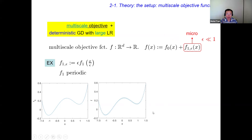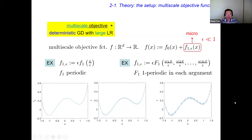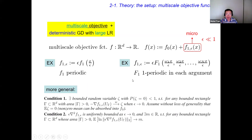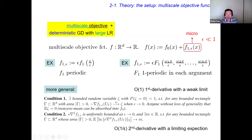One instance is taking a periodic function, squeezing it in the x and y directions, and adding it to the macroscopic potential to get a multi-scale potential. You can also have what dynamics calls quasi-periodic microstructure with multiple frequencies. Our assumptions are actually pretty mild — roughly speaking, we just need the micro potential to have a gradient that is order one, and also the second-order derivative of the micro-potential to be order one over epsilon.